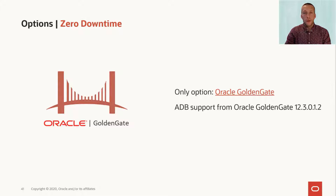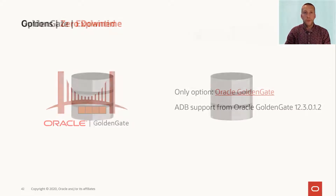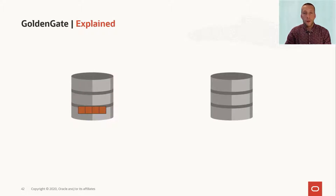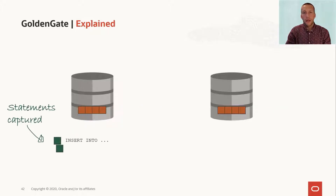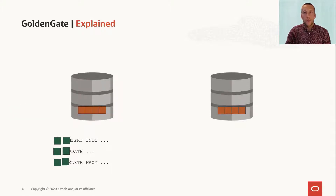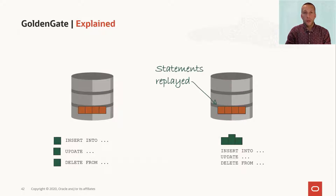If you want zero downtime, there is only one option and that's GoldenGate with a Datapump initial load. As of GoldenGate version 12.3, there is support for the Autonomous Databases. For those of you that are not familiar with GoldenGate, let me quickly recap. With GoldenGate, you start with an initial load using Datapump. GoldenGate will then capture the statements on the source database and put them into a trail file which is sent to the Autonomous Database where GoldenGate replays those statements.